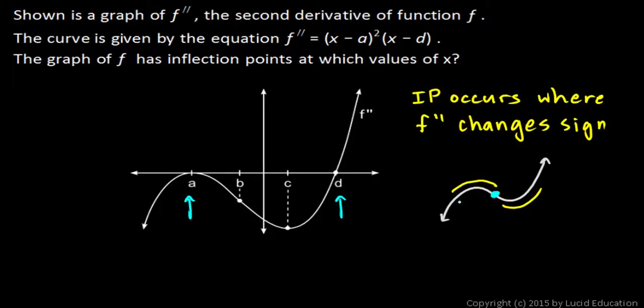And where the concavity is down, that would be a negative second derivative. And where the concavity is up, that would be a positive second derivative. And right there at that point, at the inflection point, the second derivative is zero.